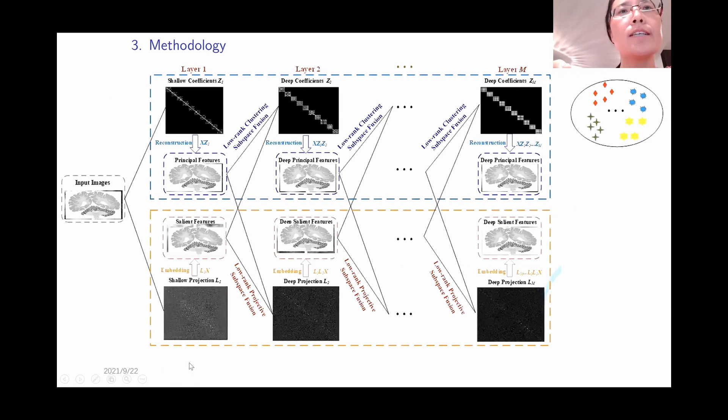Since we want to do it in the deep flowchart, we just show the two components: the principal components and the salient feature components. In each layer, we fuse the former layers' principal features and the salient features.